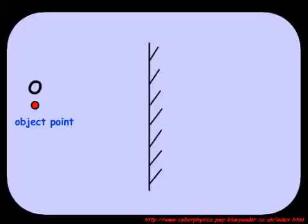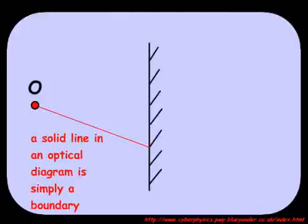Now add your object point and label it O. Take a ray from that point and make it hit the mirror. Remember that for a line to represent a ray in an optical diagram, it has to have an arrow on it.